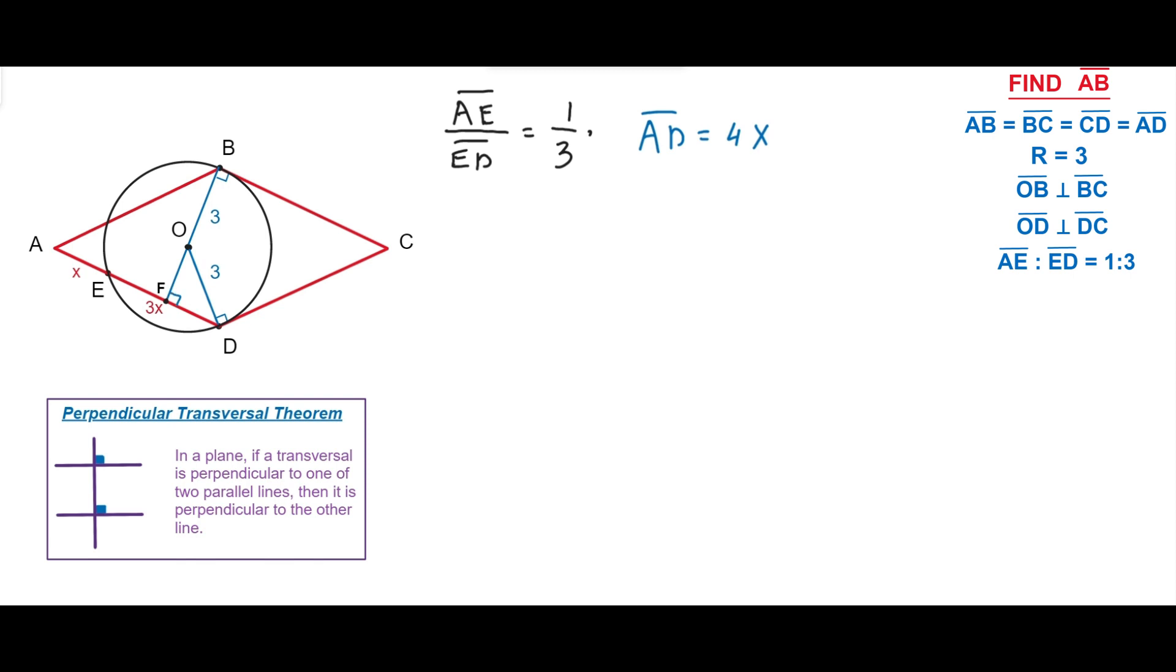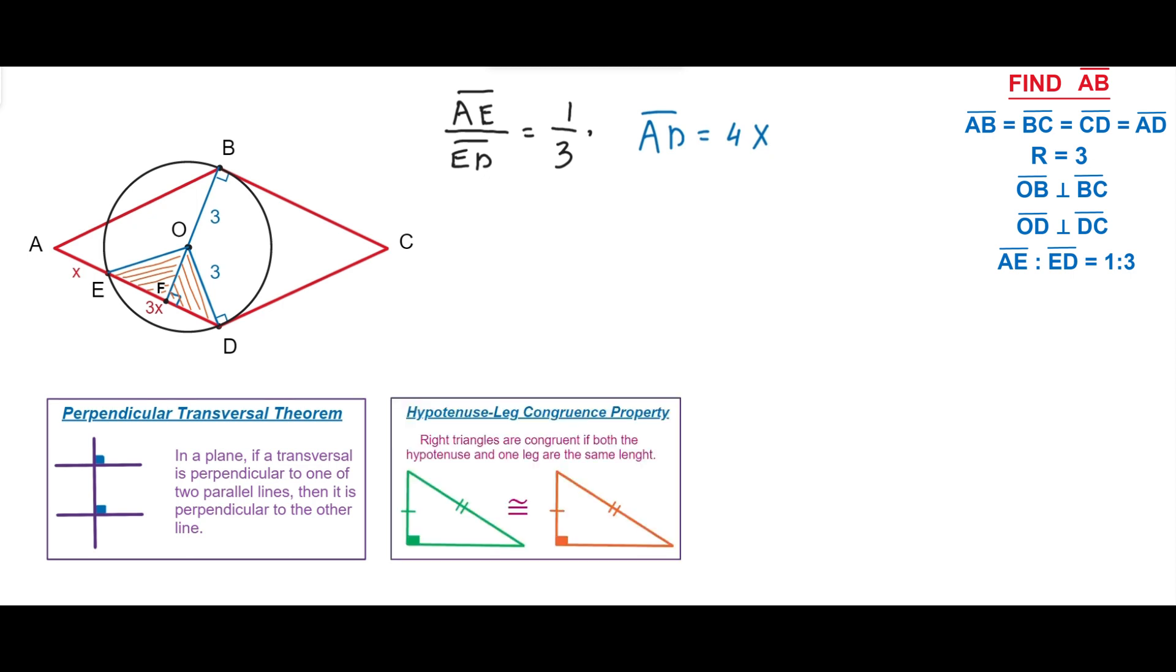Let's consider the triangles EOF and DOF. The triangles EOF and DOF are congruent according to hypotenuse leg congruence property. They have a common leg and both hypotenuses are congruent as they are represented as the radiuses of the circle.